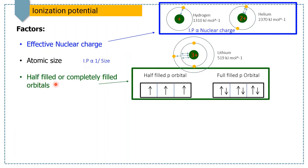The third factor is half-filled or completely filled orbitals. Due to Hund's rule, electrons in half-filled or fully-filled orbitals are more stable because they face less repulsion and cannot be easily removed. The ionization energy of half-filled or fully-filled electrons is greater. Another reason is the symmetry of these half-filled or fully-filled levels, which leads to greater stability.